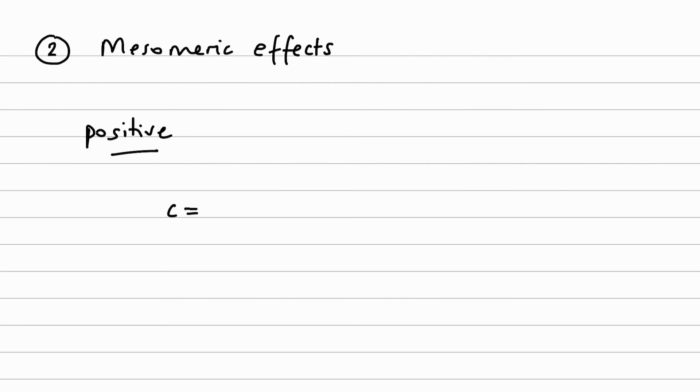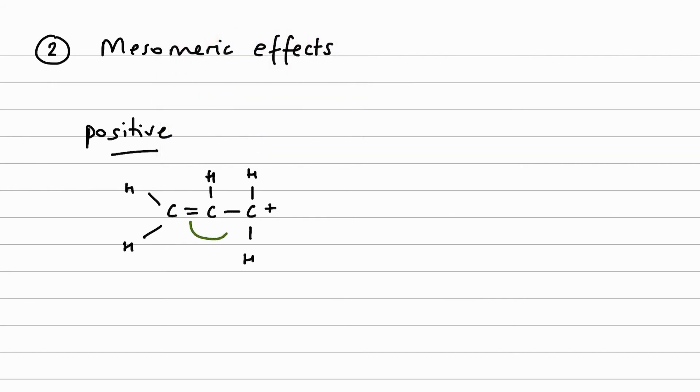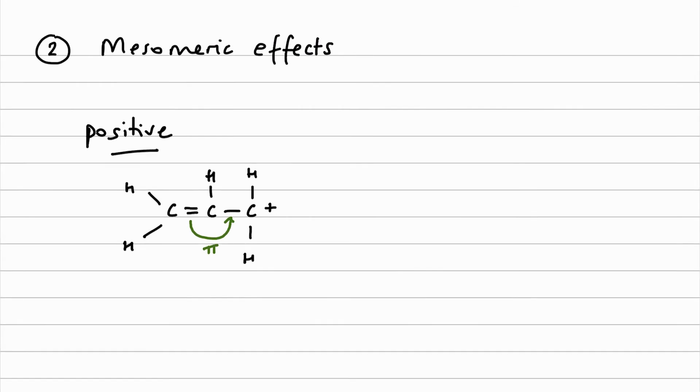So I'm going to start by looking at this ion here. It's another carbocation but it's also got an alkene functional group, and we know that alkenes, the double bond exists as a sigma bond and a pi bond. So we have the ability, or the ion has the ability, for these pi electrons to move towards the positively charged carbon atom. As a result, we are going to end up with resonance forms of this ion.